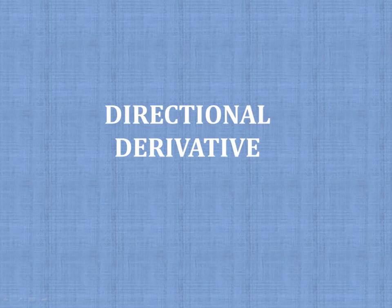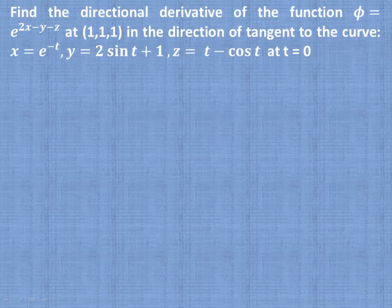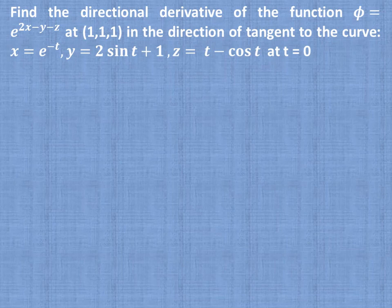This video will help study the example on directional derivative. Find the directional derivative of the function φ = e^(2x - y - z) at point (1, 1, 1) in the direction of the tangent to the curve x = e^(-t), y = 2sin(t) + 1, and z = t - cos(t) at t = 0.